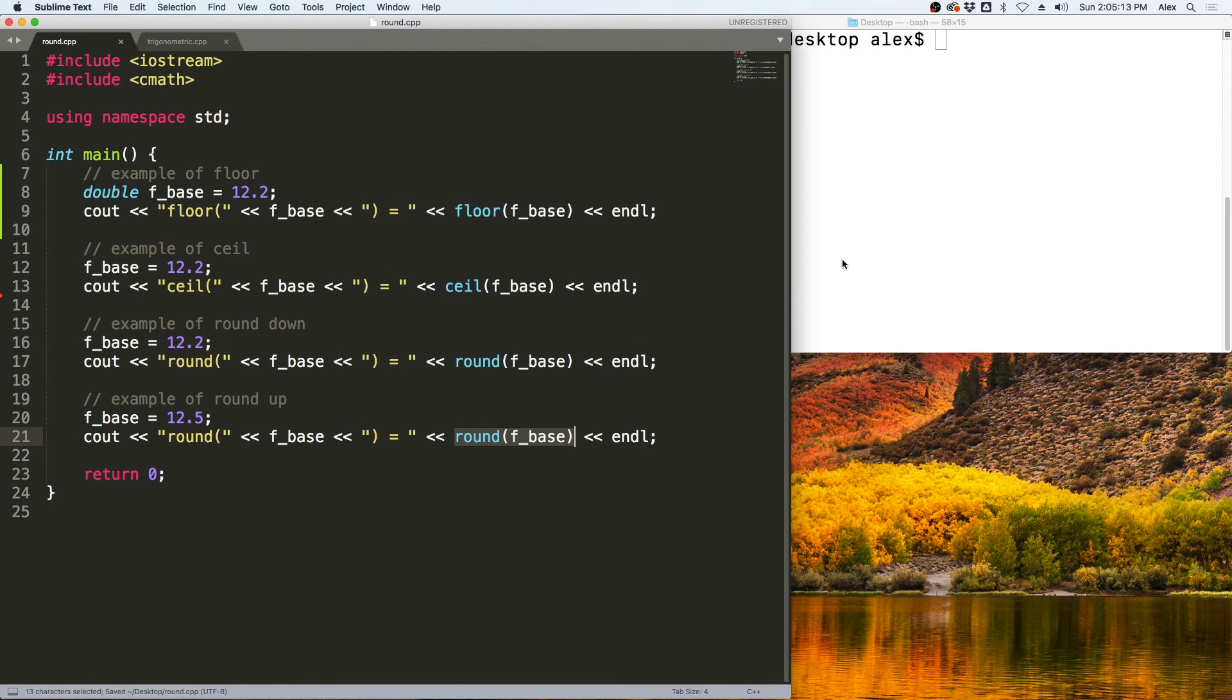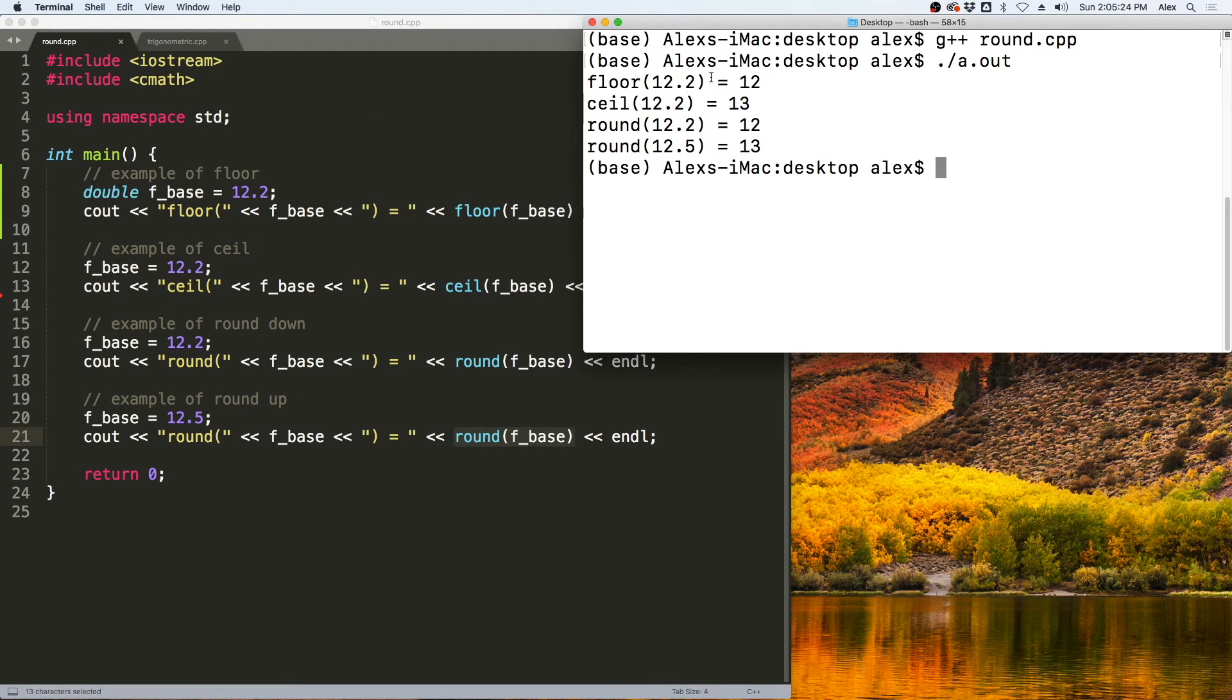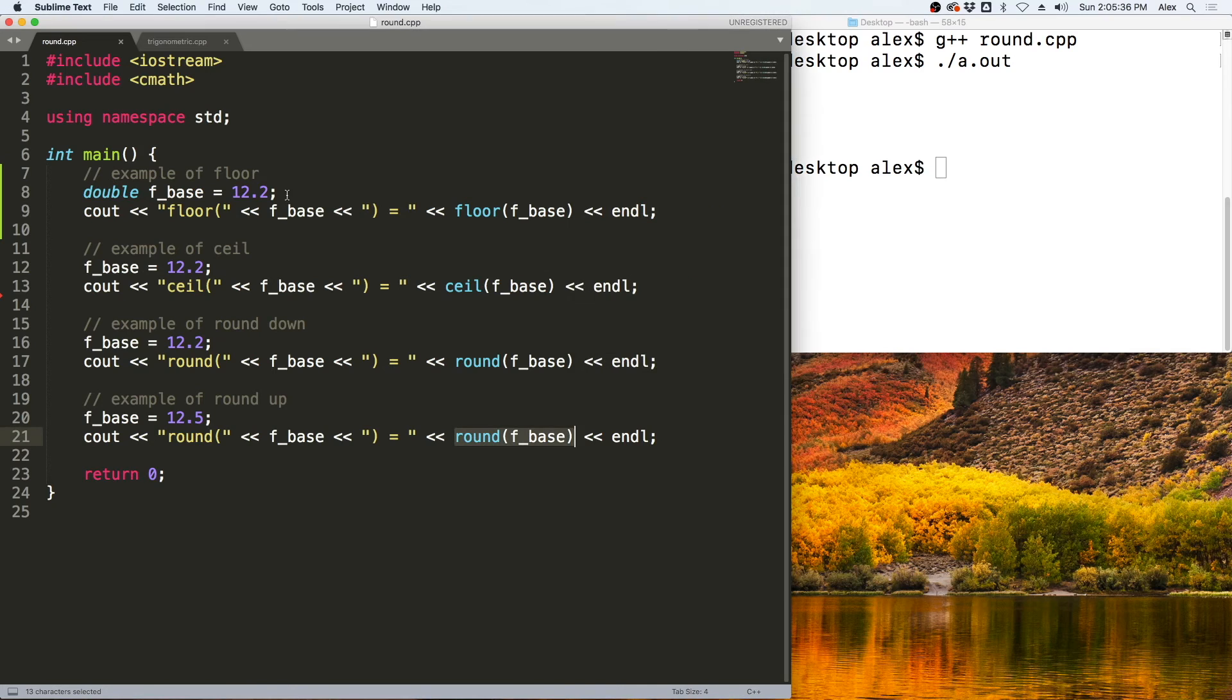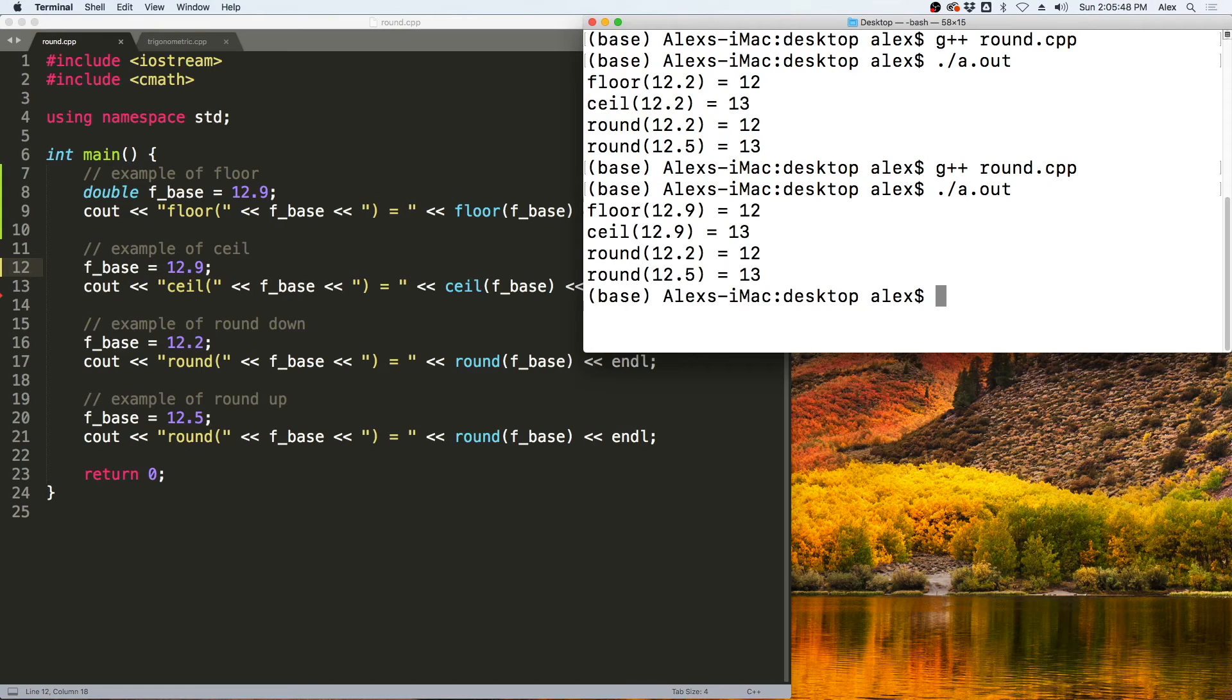We will expect this to round up to 13 from this call to round. Let's save this and compile that program. Then we can run the program once it has compiled. You see the Floor of 12.2 is 12, the Ceil of 12.2 is 13, and then the round of 12.2 is 12, and the round of 12.5 is 13. We still get 12 and 13 for these first two answers because it's still rounding down for the floor and up for the ceiling.